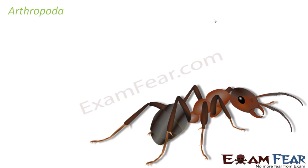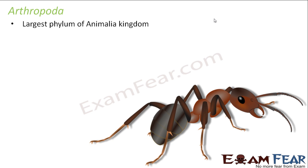In this Arthropoda phylum, we will talk about the different types of insects, be it butterfly, housefly, mosquitoes, grasshopper — they all fall under this category of Arthropoda. You will be surprised to know that a huge number of species exist for this phylum, almost 9 lakh species. Till now we were talking in thousands — 5,000, 7,000, 10,000 — but now we are saying that some 9 lakh species exist. So this is the largest phylum of the Animalia kingdom.